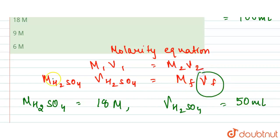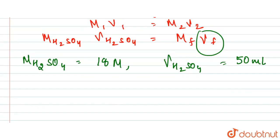So here now what we will have: 18 into 50 upon 1000. Why 1000? Because it is in milliliters, we converted it into liters. Now final molarity into 100 upon 1000.